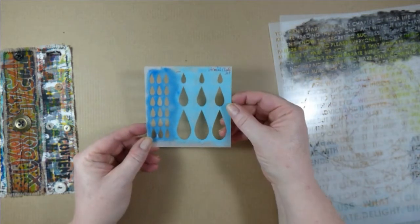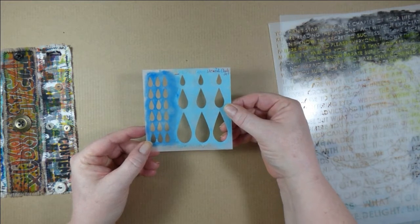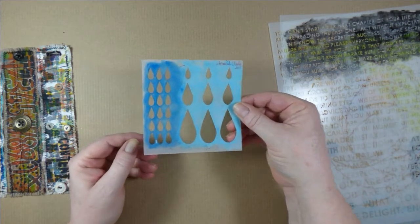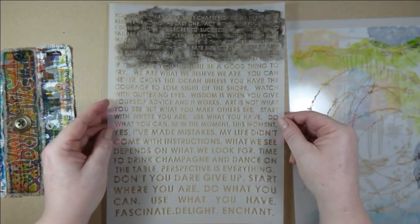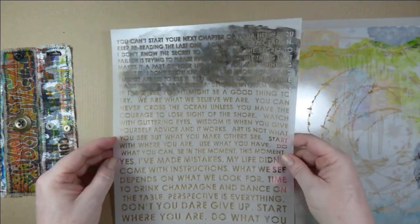Then I've used a small stencil from another stencil club kit, this one designed by Carolyn Dube for the June 2016 kit. She has also designed this lovely stencil called Wall of Words. I've used it on the blue cuff with drops.